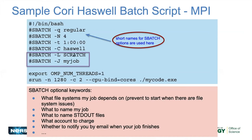There are additional optional flags. For example, -L specifies a license for the scratch file system — if scratch is having issues, it blocks your job from starting so it won't fail immediately. You can give your job a name with -J for easy identification. You can also specify stdout/stderr file names, which account to charge, whether to receive email notifications, and more.